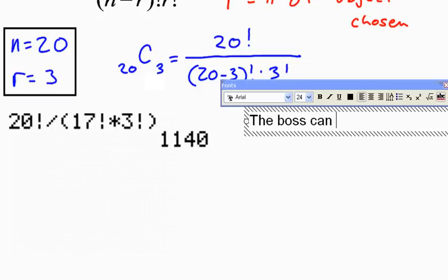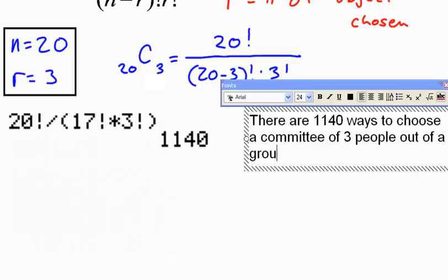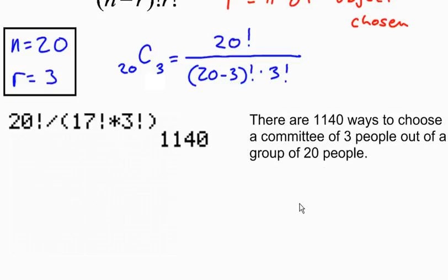The boss can choose... Let me change that. There are 1,140 ways to choose a committee of 3 people out of a group of 20 people. And there we go.